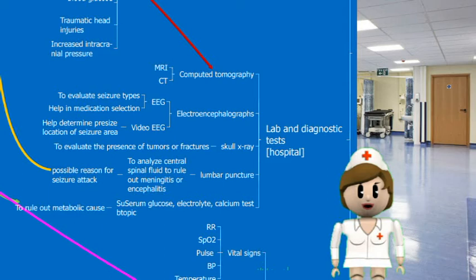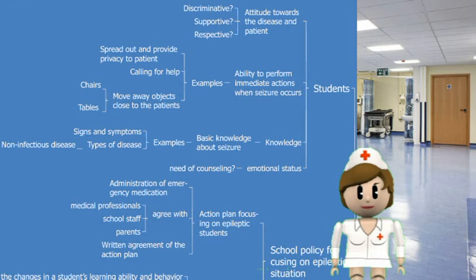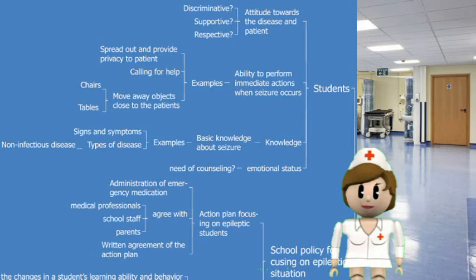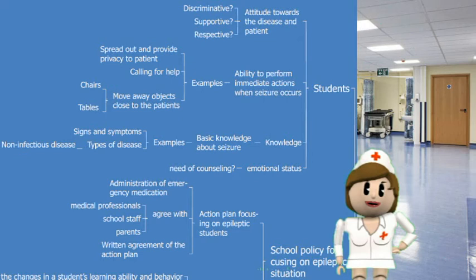The school assessment includes three aspects: school students, school seizure policy, and teachers. For assessing Jack's classmates, we should know their attitude towards the disease and patient — are they discriminative, supportive, or respectful? We should assess if they can perform immediate actions when seizure occurs, such as spreading out to provide privacy, calling for help, and moving objects away from the patient. We should also assess if students have basic knowledge about seizure signs and symptoms, as these objectives will help in planning school-based interventions.